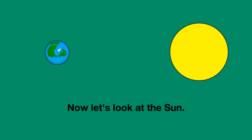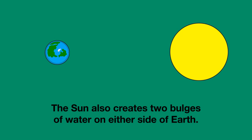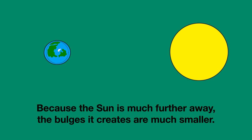Now let's look at the Sun. The gravitational pull of the Sun also creates two bulges in the water on either side of Earth. But because the Sun is much, much further away than the Moon, the bulges it creates are much smaller.